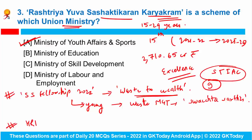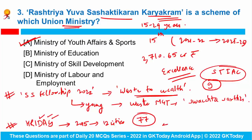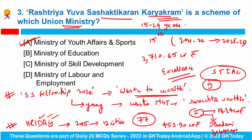You would have heard about the scheme named Hriday, which stands for National Heritage City Development and Augmentation Yojana. It is a central sector scheme launched in 2015 and implemented in 12 cities. As many as 77 projects have been implemented with an outlay of 453.90 crore rupees, and two projects worth 18.34 crore rupees are under implementation — one from Badami, Karnataka and one from Warangal, Telangana. The mission period ended in 2019, so the time period of the Hriday scheme is 2015 to 2019.